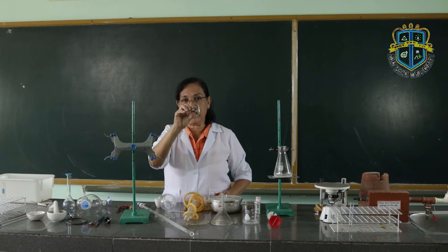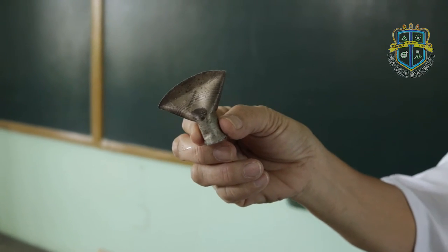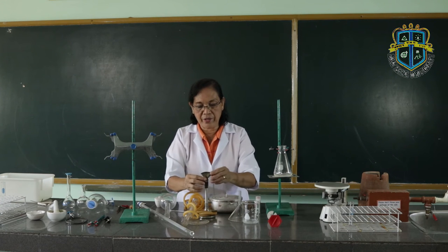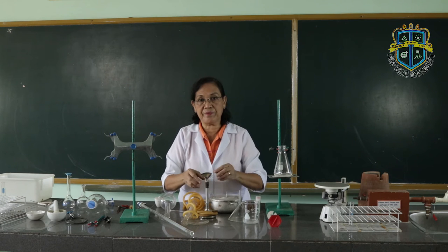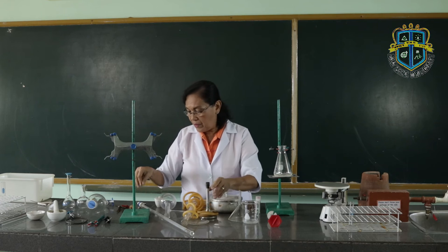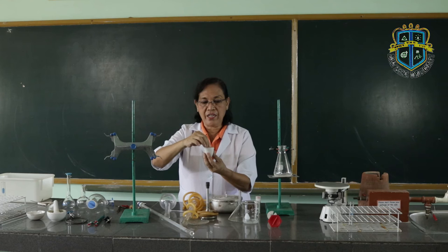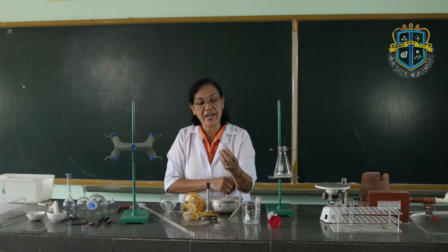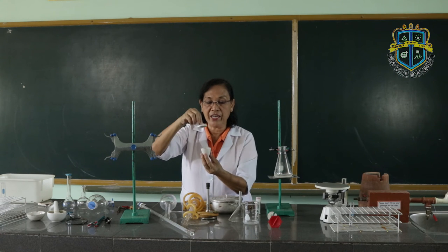This is the fishtail. The fishtail is used together with the Bunsen burner to spread the flame — you place it on top of the barrel of the Bunsen burner. This is the crucible with cover. For chemical reactions where you heat the substance inside the crucible and air is not needed, you cover the crucible.